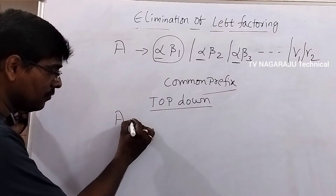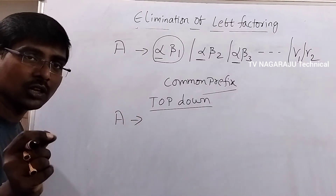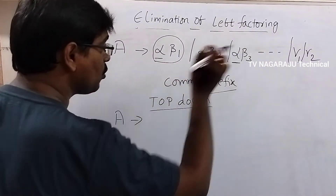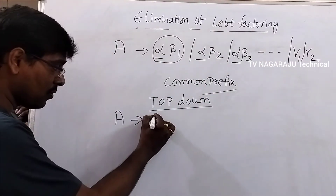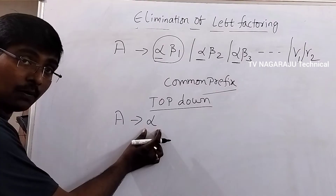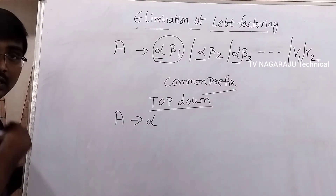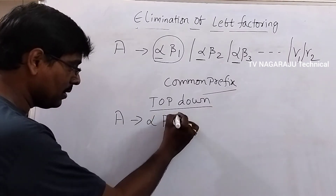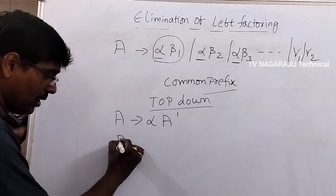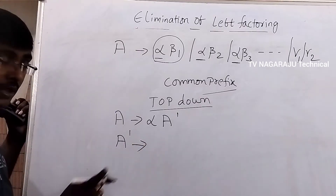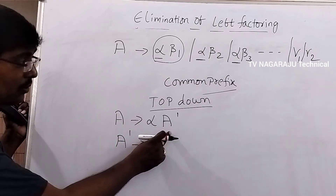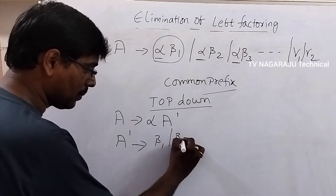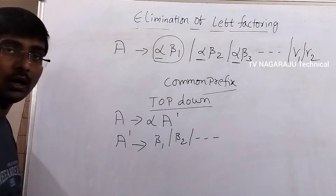How to eliminate? The simple procedure is: for each and every common prefix production, write a new production. Write down the common prefix — alpha, which can be any number of characters — followed by a new non-terminal A-dash. Then A-dash tends to beta1 or beta2 or beta3, and so on.